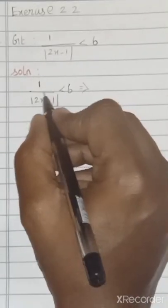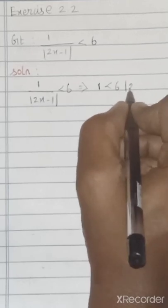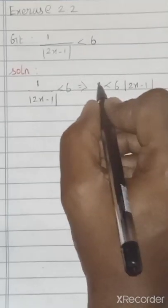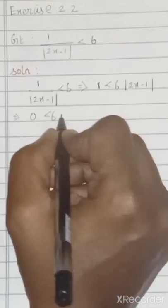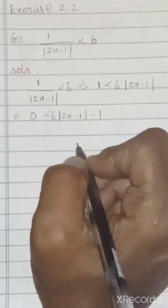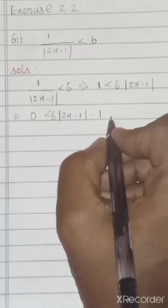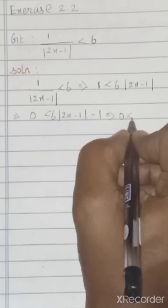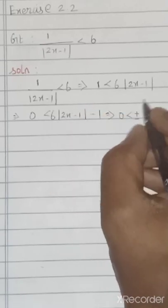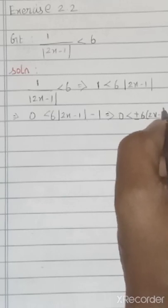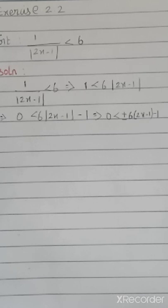So solution — how we can start? Take the question: 1 over |2x − 1| < 6. This mod implies we can take it to the right-hand side. So we can write 1 < 6 · |2x − 1|. Again, take this plus 1 to that side, which implies 0 < 6|2x − 1| − 1.